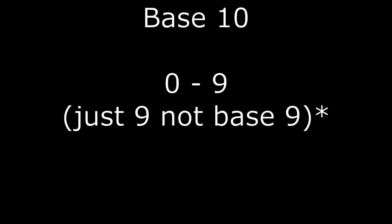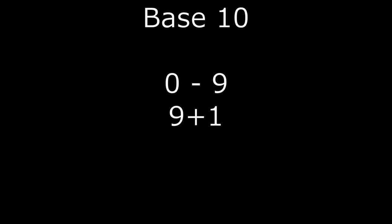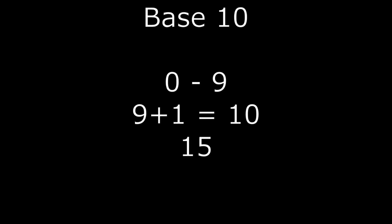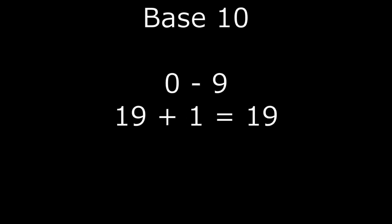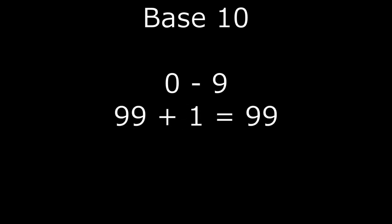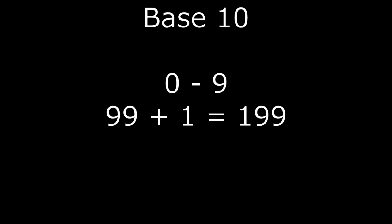We count in base 10. This means we have to start at 0 and go up to 9 before we have to carry. 9 plus 1? Well, that doesn't work, so we have to put the 1 next to the 9 and the 9 rolls back to a 0. Then we keep counting: 11, 12, 13, 14, 15, 16, 17, 18, 19. Then how do we add 1 to 19? We need to carry the 1, so the 1 in 19 becomes 2 and the 9 becomes 0 and we keep going. Eventually we get to 99, but how do we add 1 to 99? We can't carry it to the 10 spot because it's already 9, so we need to carry it to 100 and the 9s become 0 again.